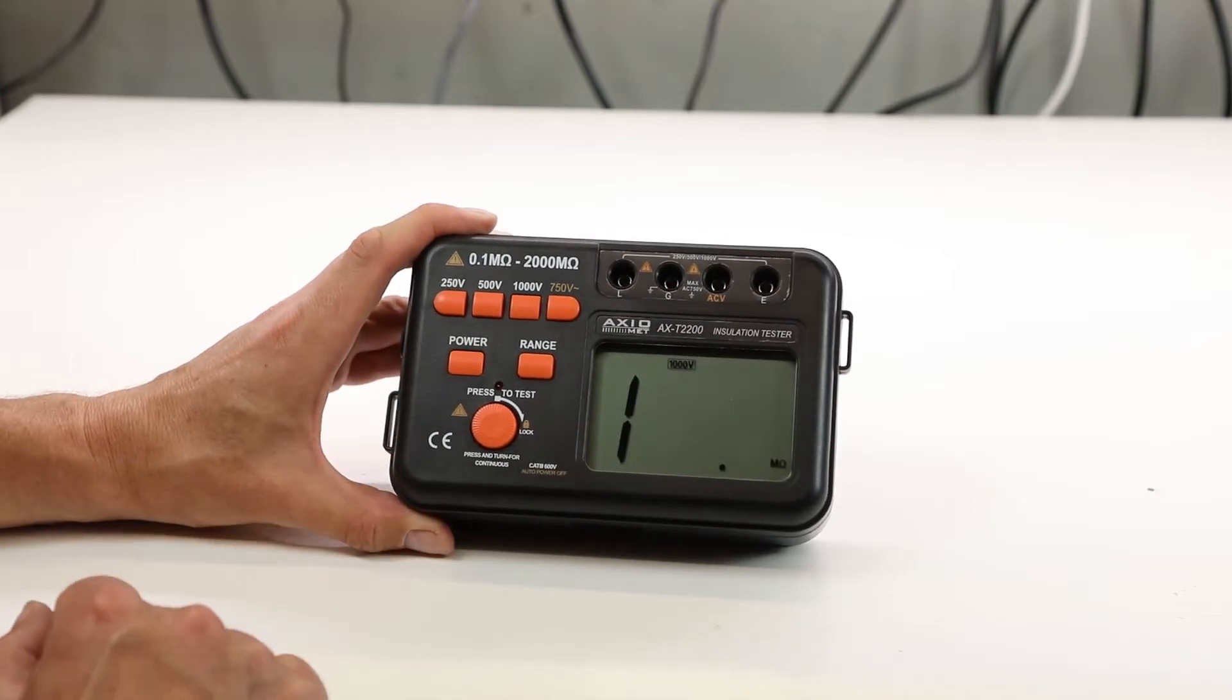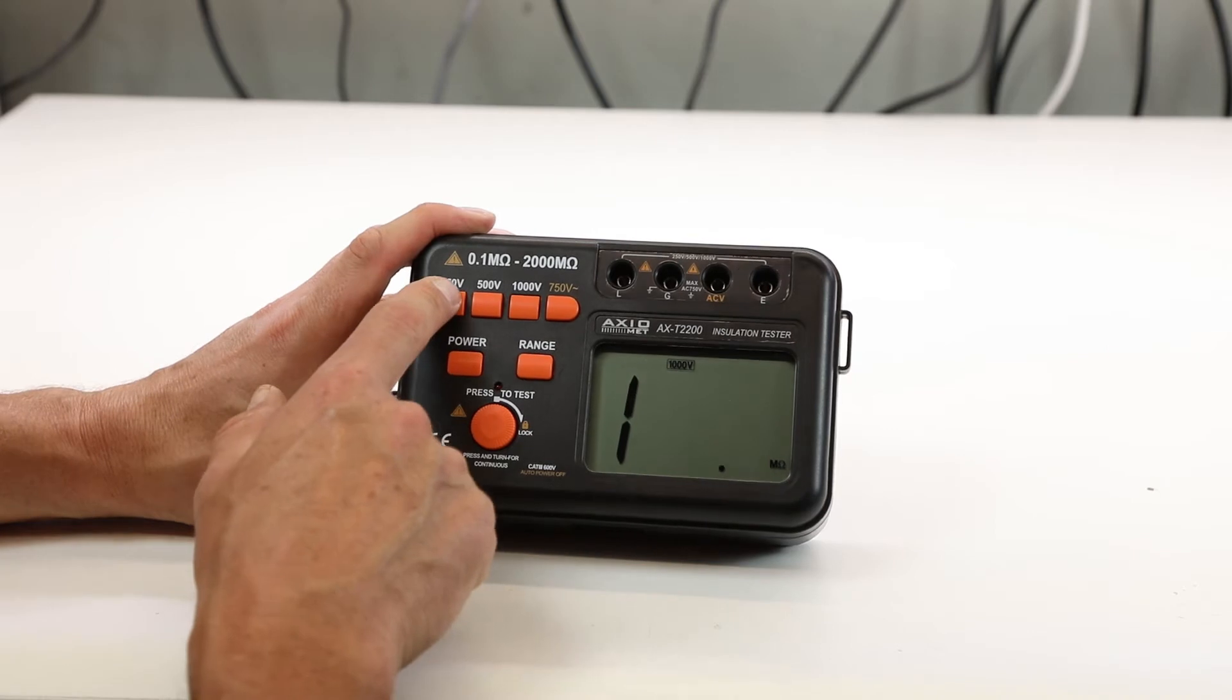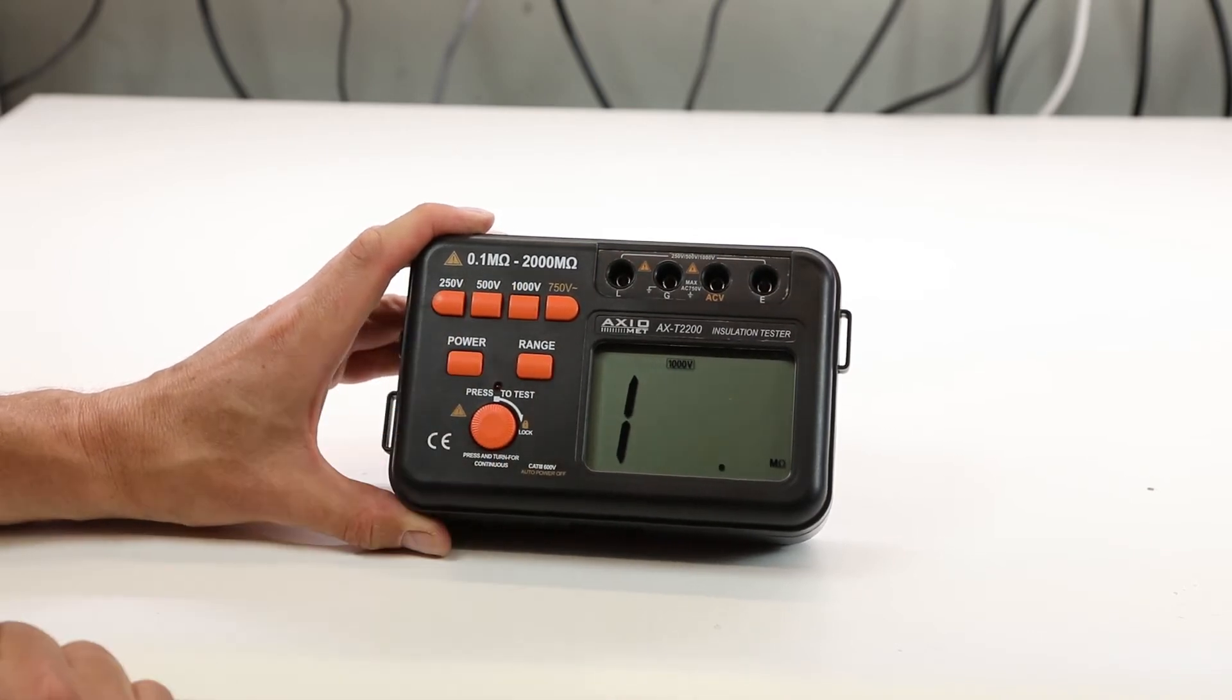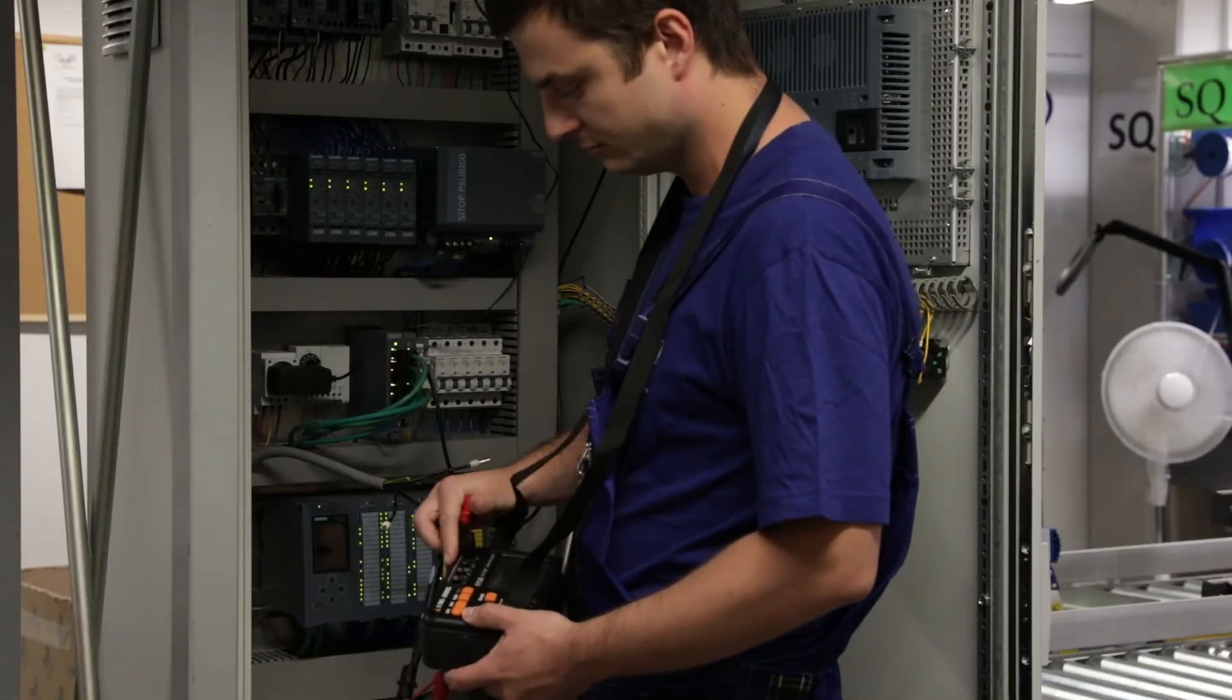Depending on your needs, select the appropriate voltage and range. After switching on the ohmmeter, connect the electrode of the measured circuit to the appropriate device socket.